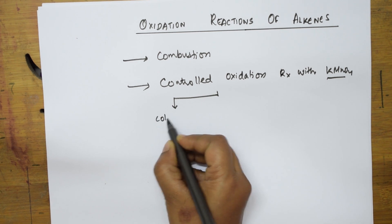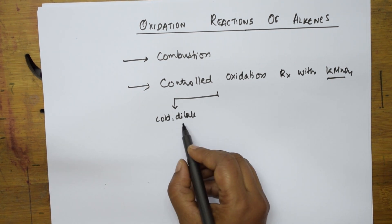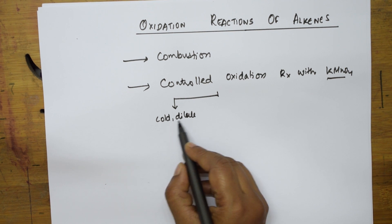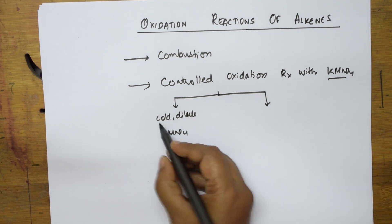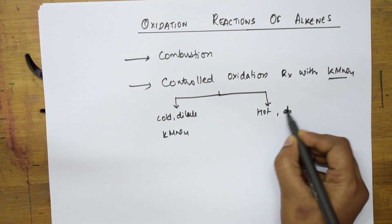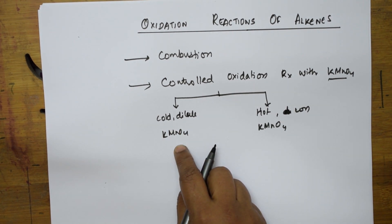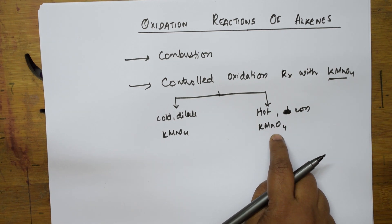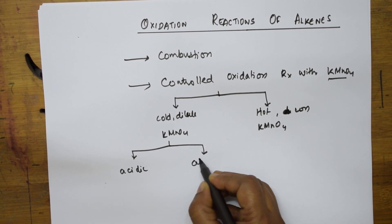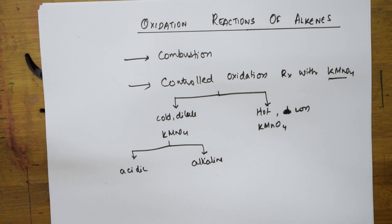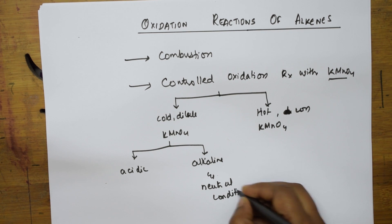KMnO4 will be studied under three headings. First, cold dilute KMnO4, which is one condition. Next, opposite to cold is hot, then dilute. Opposite to dilute is concentrated KMnO4. So we are going to study under cold dilute KMnO4 conditions and under hot concentrated KMnO4 solution. Under cold dilute, you have two more things to remember: acidic condition, as well as alkaline and neutral conditions.